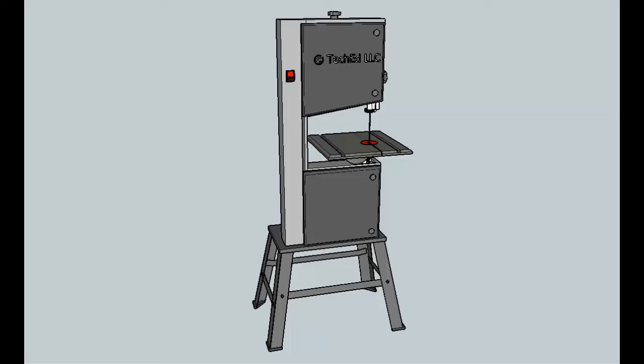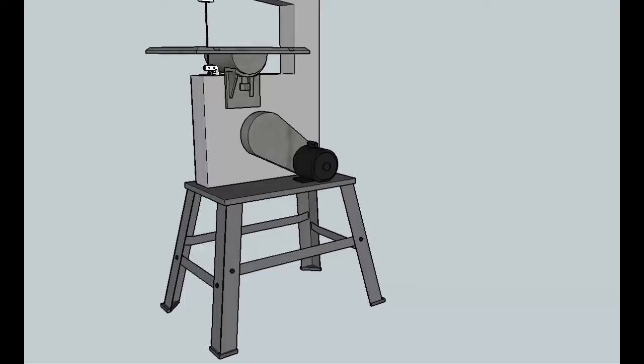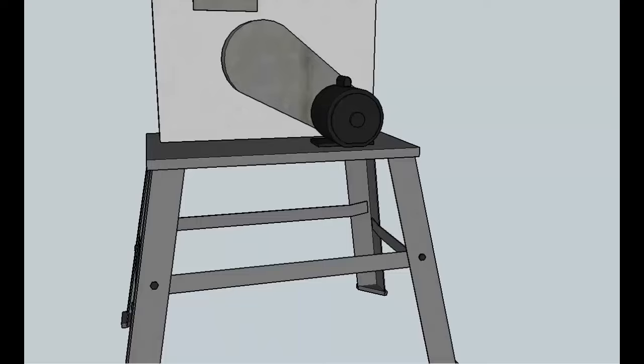This would be the front side where you'd be standing when using the saw. On the back side there's typically a motor. Sometimes it sits on top of the base, other times it's in the base and may have a closed cabinet.